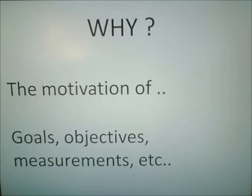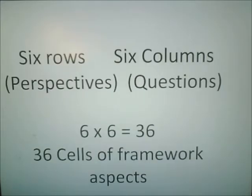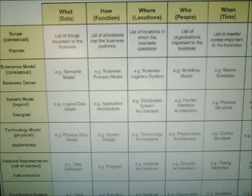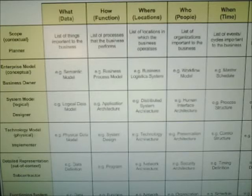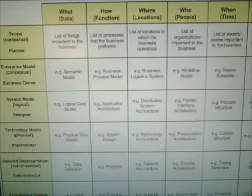'Why' is the final question — this is the motivation of all the goals, objectives, measurements, and so on. Six rows of perspectives and six columns of questions give us 36 cells of framework aspects. These go into a matrix where the first column is the perspectives, the first row at the top is the questions, and the cells contain the data.